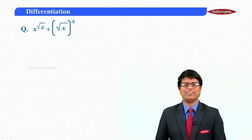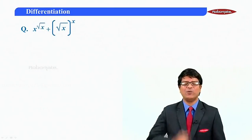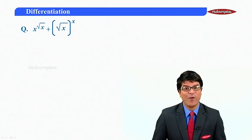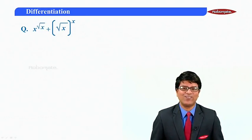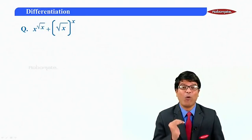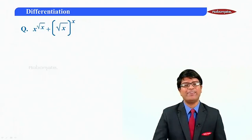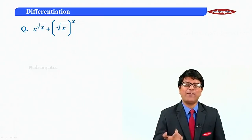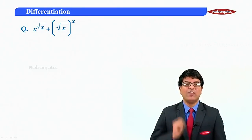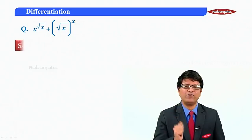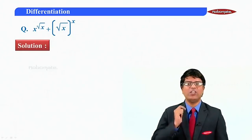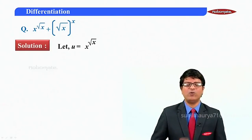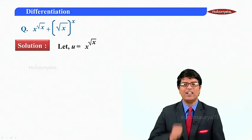The problem is x raised to root x plus root x raised to x. When there are two functions of the form variable raised to variable separated by plus or minus, we will name the first function as u. So u is equal to x raised to root x.